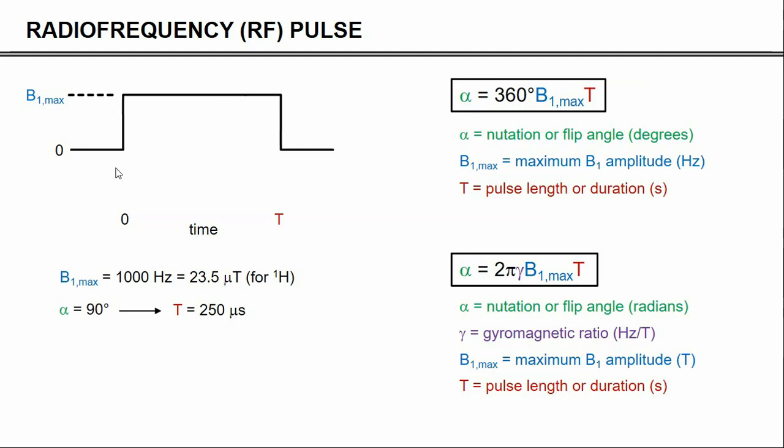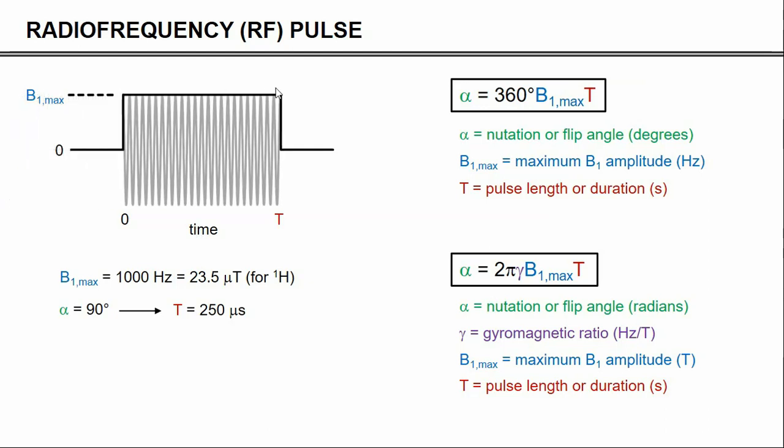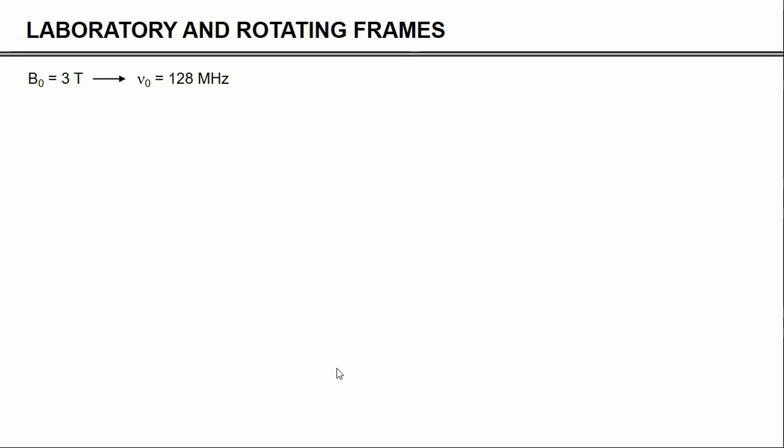Now, before we move on, it is important to realize that this black line is only the envelope function of the square pulse. The square pulse itself is, of course, applied at the Larmor frequency, and the Larmor frequency is typically between a few megahertz to several hundred megahertz. So there is always a frequency modulation that is part of this. But most publications only show the envelope function, shown in black. But always be aware that it is actually a high-frequency RF pulse.